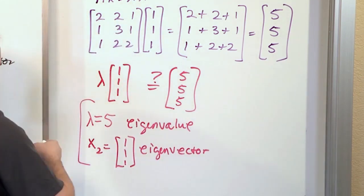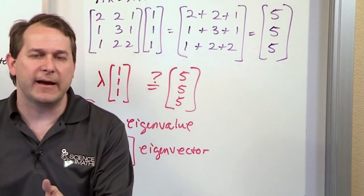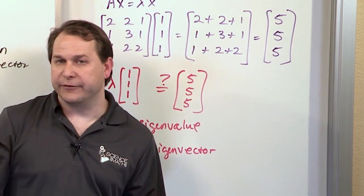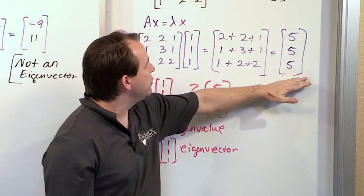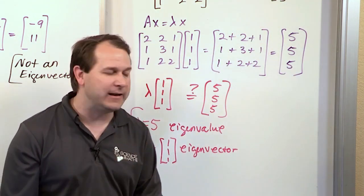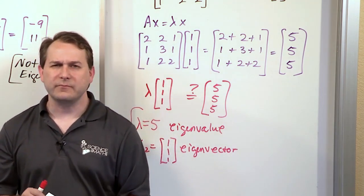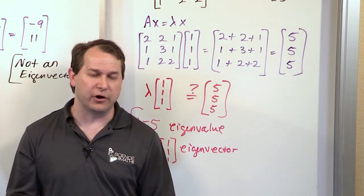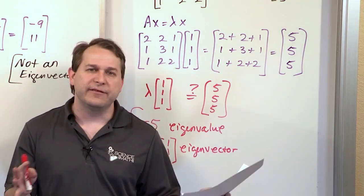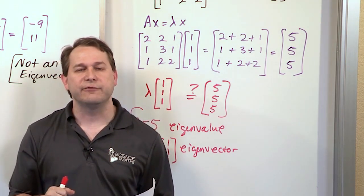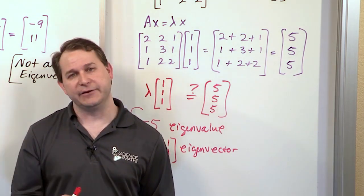So now you understand why I say eigenvectors and eigenvalues go together like peanut butter and jelly. For every eigenvalue you have, you're going to have one or more eigenvectors. The way you test for that is you run the vector through the equation and see if what you get can be written as a multiple of your original vector. If it can, you've identified the eigenvalue and confirmed your test vector is an eigenvector. In this section we've introduced the concept of eigenvalues and eigenvectors, but we haven't learned how to find them from scratch. In the next section we'll introduce the method to actually compute eigenvalues and eigenvectors of a problem.